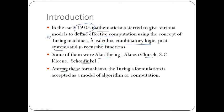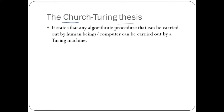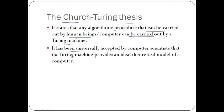Among these formalisms, Turing's formulation is accepted as a model of algorithm or computation. The Church-Turing thesis states that any algorithmic procedure that can be carried out by human beings or a computer can be carried out by a Turing machine. It has been universally accepted by computer scientists that the Turing machine provides an ideal theoretical model of a computer — whatever a computer can do will be performed by the Turing machine.